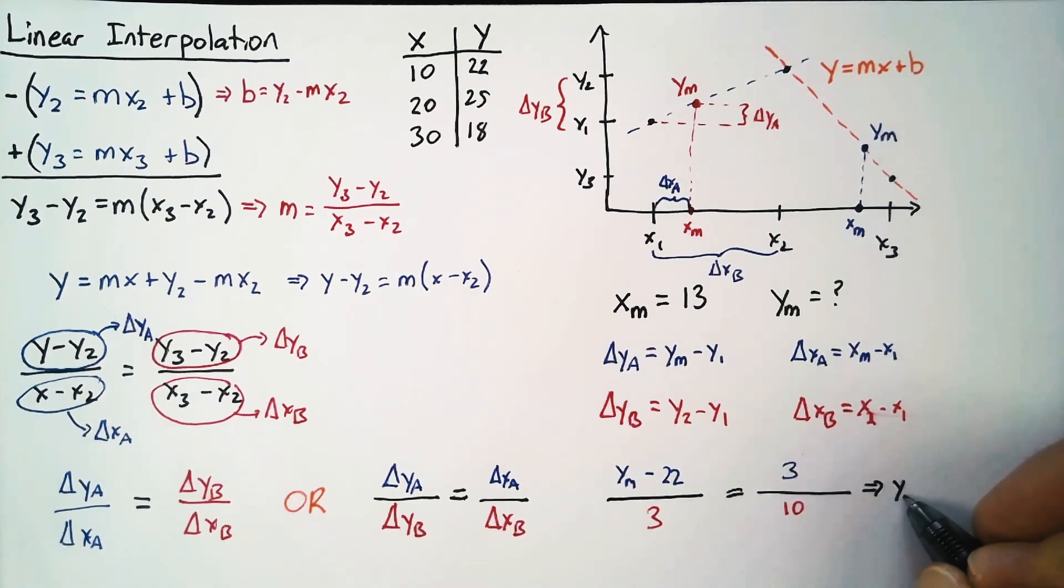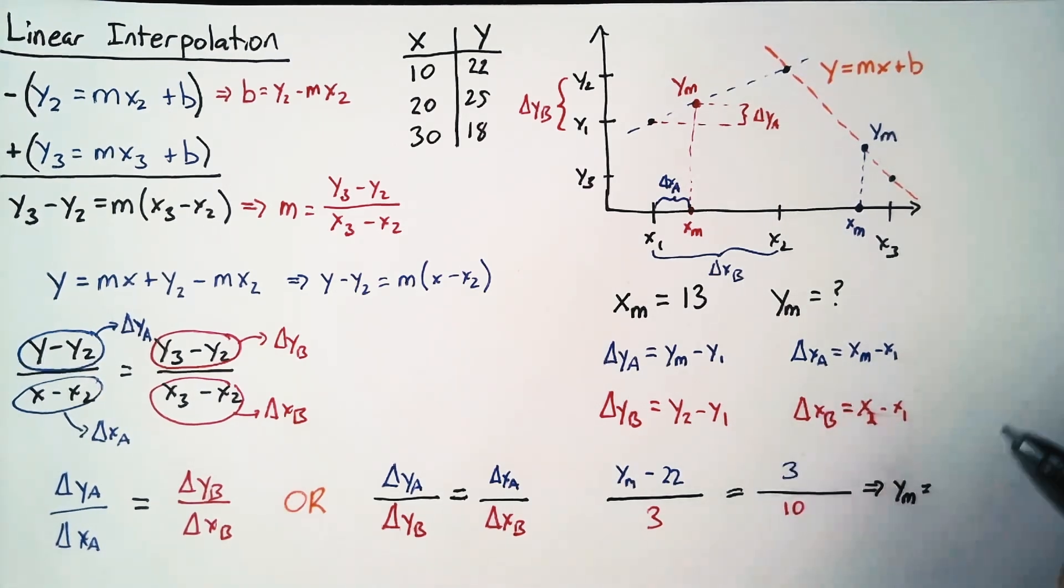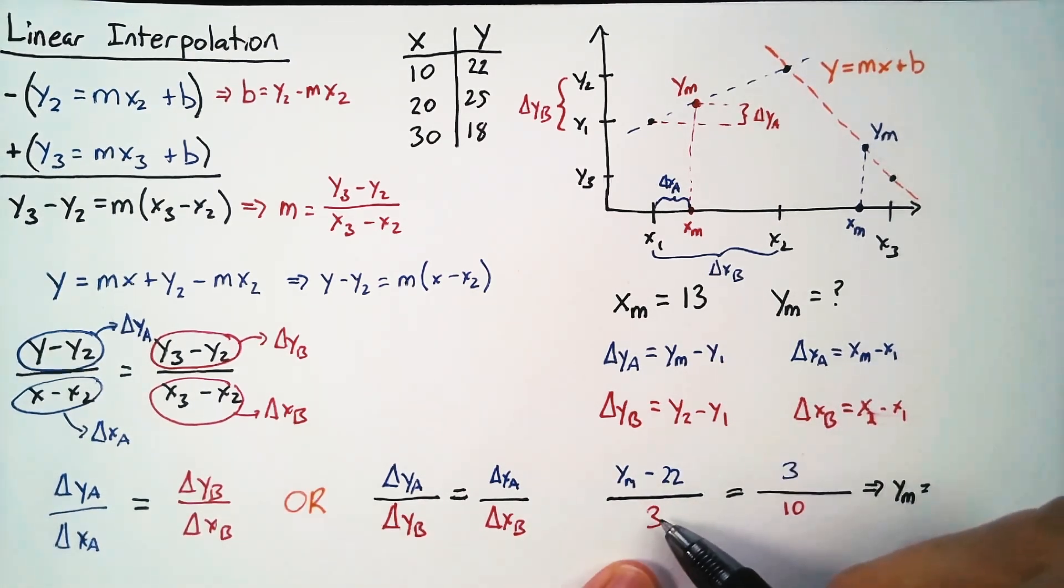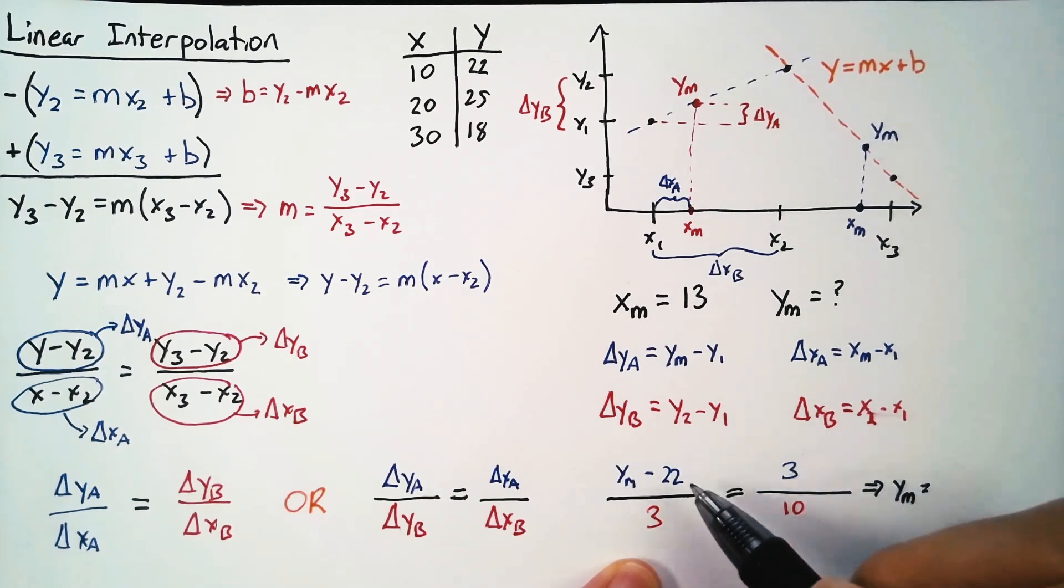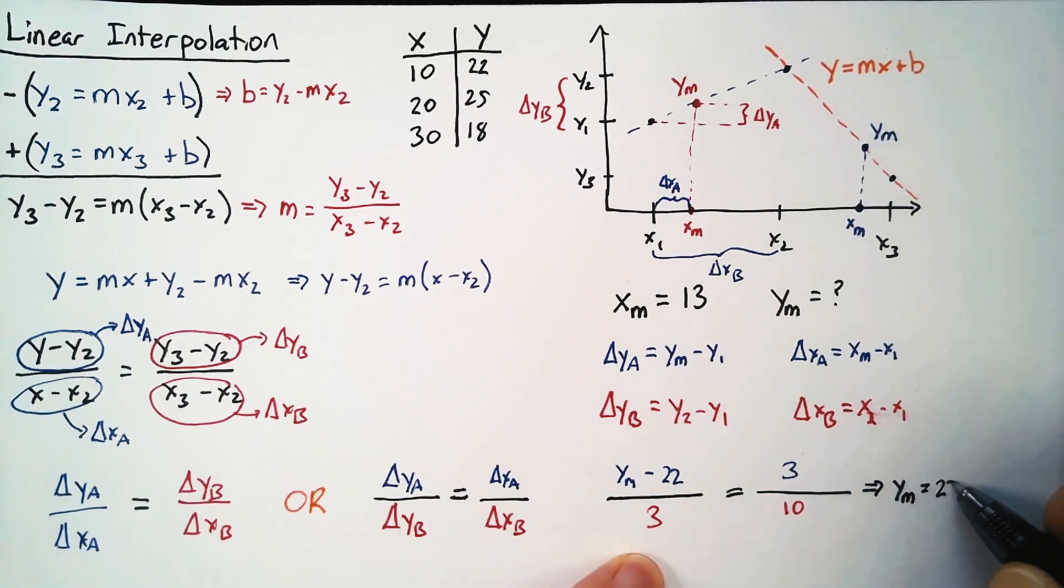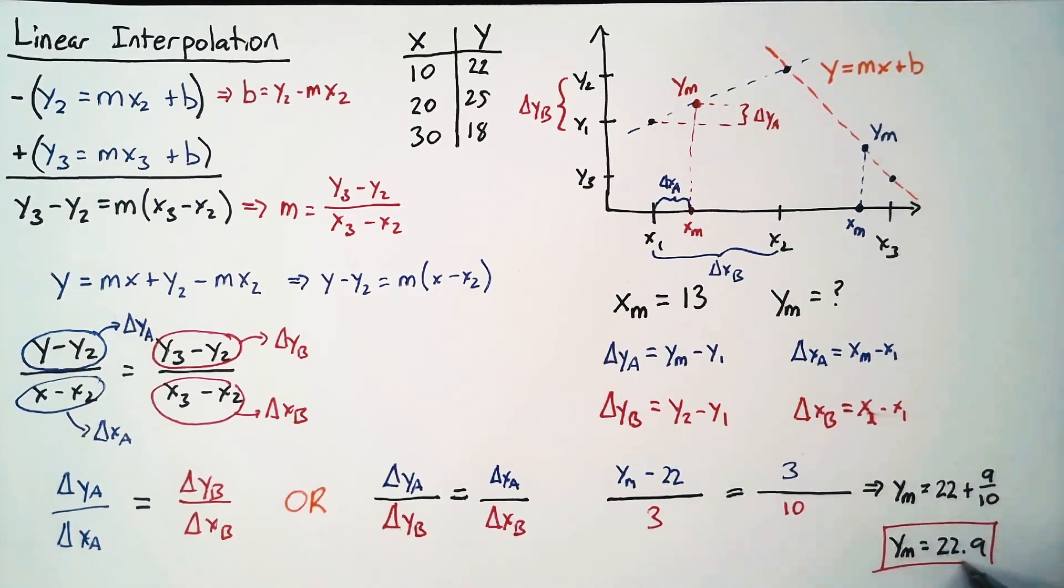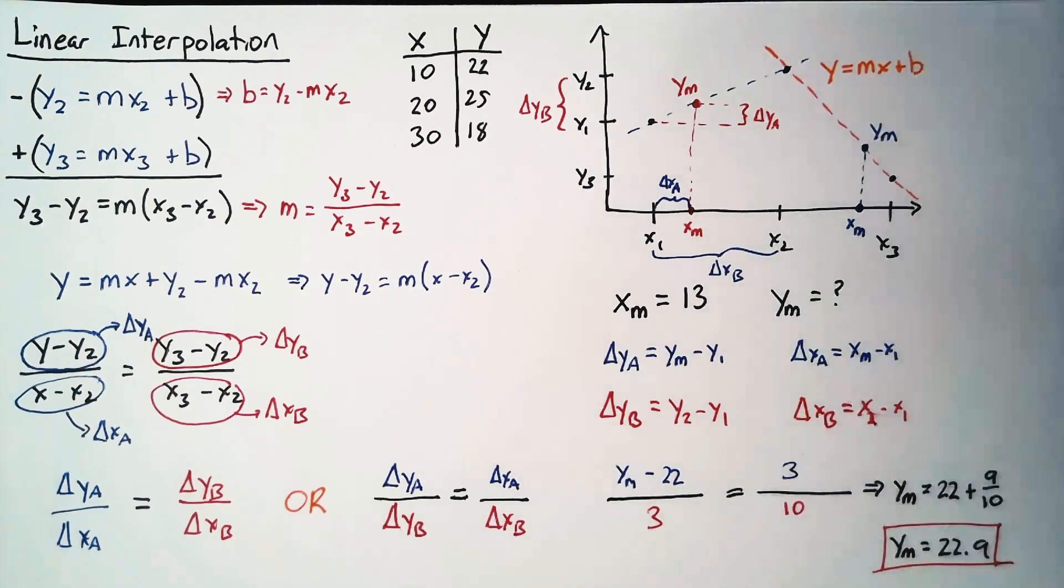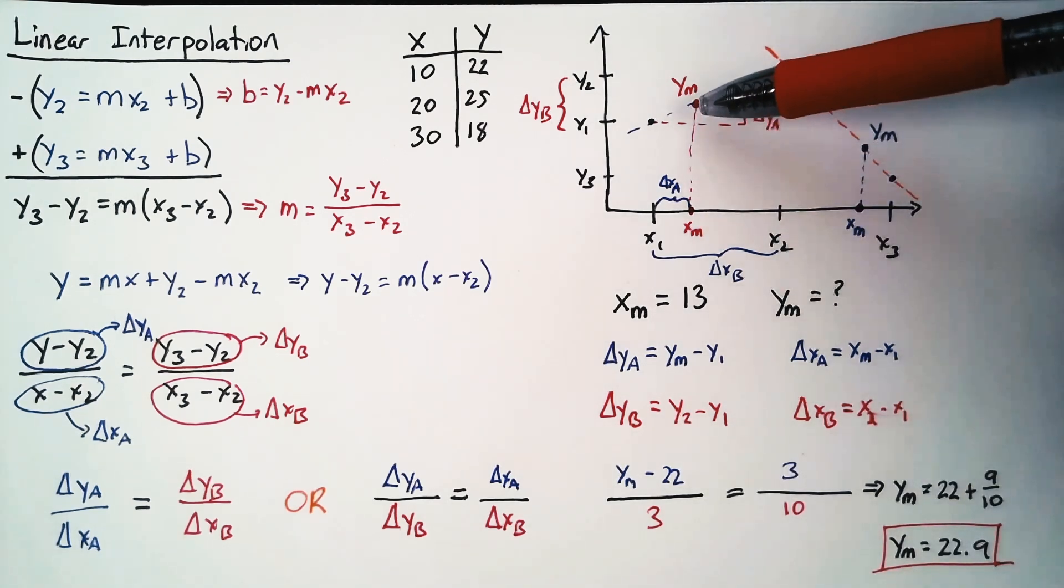So from this, we can say that ym is equal to, so we're multiplying both sides by 3 to get rid of that, and then adding the 22. And so we get 22 plus 9 tenths. Or ym is equal to 22.9. And this is our final answer. So when x is equal to 13, we get that y is equal to 22.9.